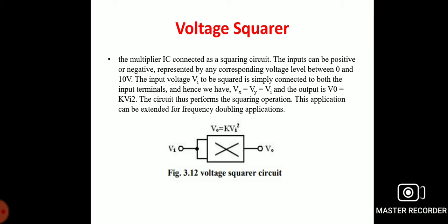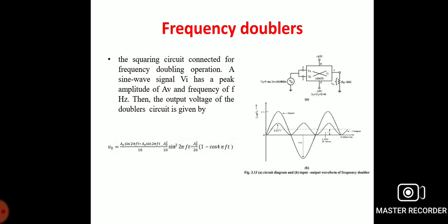In the voltage squaring circuit, Vin applied to a single-input single-output op-amp gives Vout = k·Vi². This squaring application can be extended for frequency doubling. In the frequency doubler, the squaring circuit is connected for frequency doubling operation.